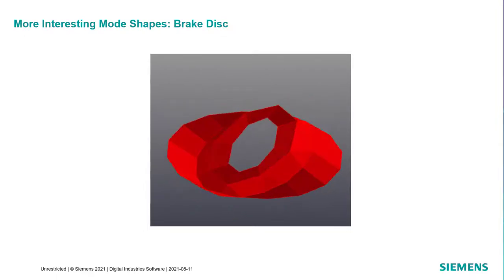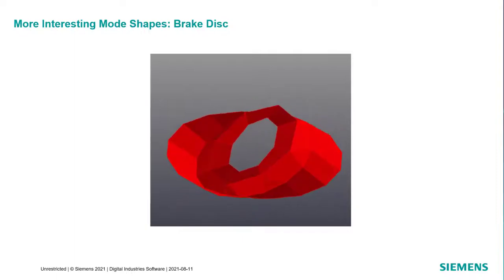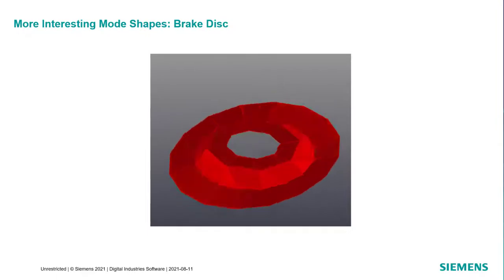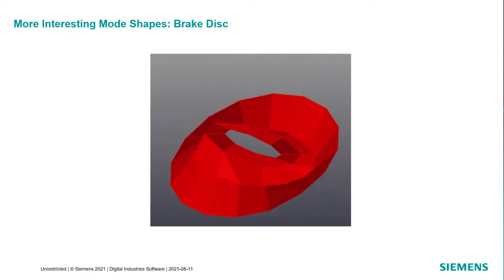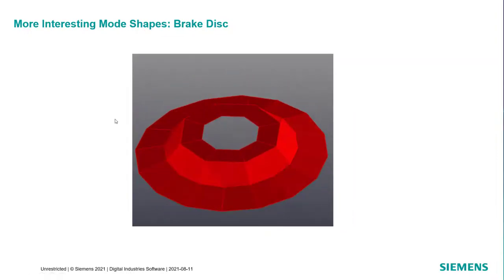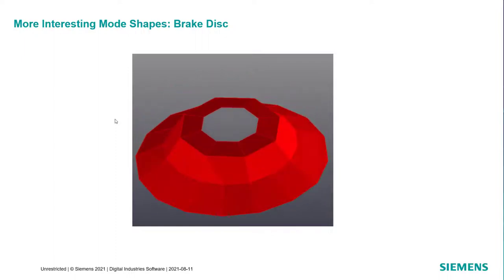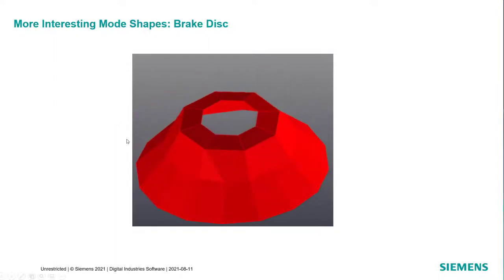Let's look at a couple more interesting mode shapes — we've got a few mode shapes of a brake disk here. Instead of looking at simple string systems, what would you call this mode, Pete? I don't know, some sort of bending — center out of phase, maybe a nice little seesaw mode if you wanted to get creative, with these two points being out of phase of each other. What about something like this? Center pumping — hooping, yeah, I like that. Top hat mode. You can become truly creative trying to describe the way these shapes look.